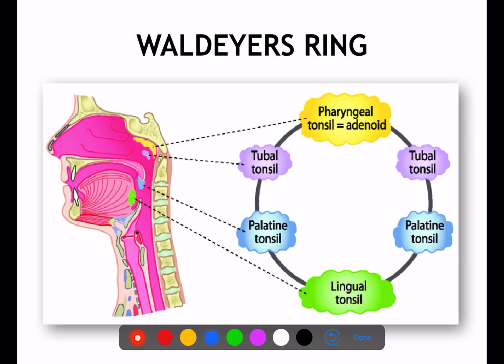There is a lymphatic chain in the pharynx called Waldeyer's lymphatic ring. It consists of four types of tonsils: the pharyngeal tonsil (also called the adenoid tonsil), tubal tonsil, palatine tonsil, and lingual tonsil.